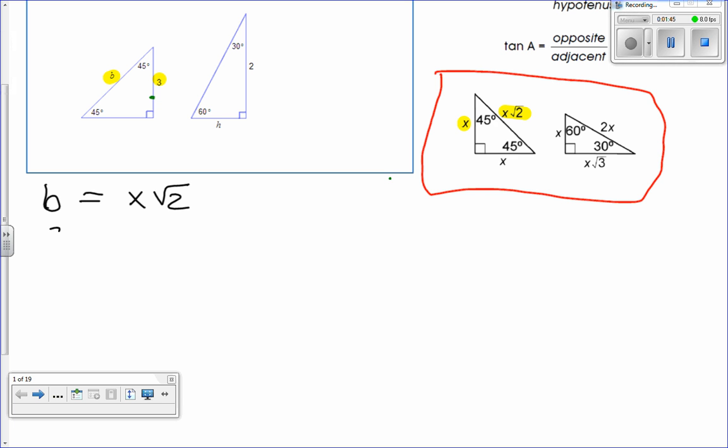And 3 is equal to x. So that tells me that I'm just going to take this 3 and sub it into this other equation to figure out what b is. So here we go, so b is going to be equal to 3√2. It's that easy.